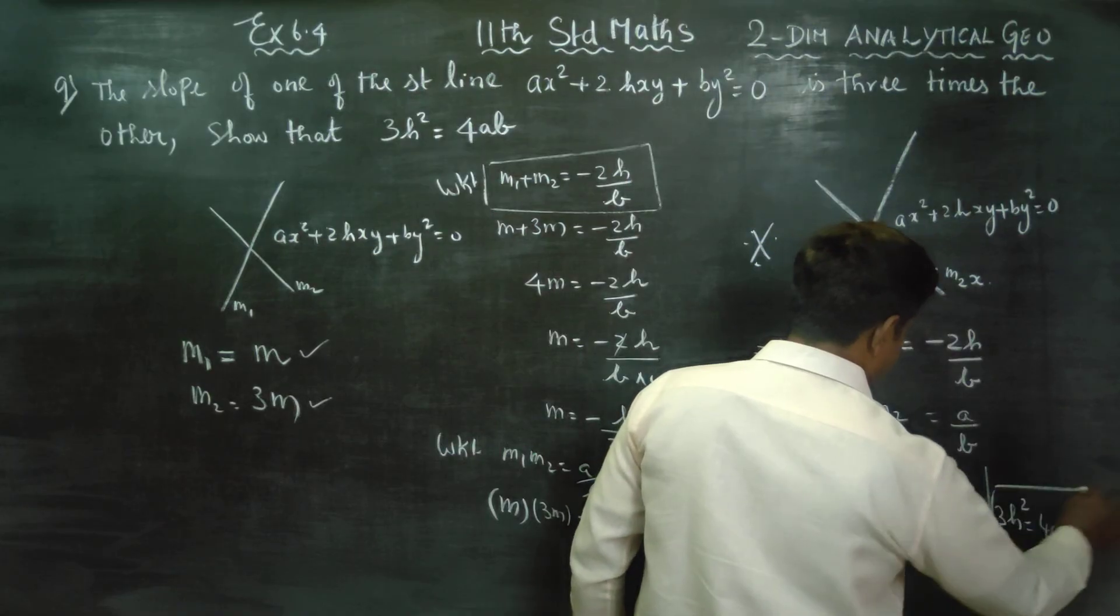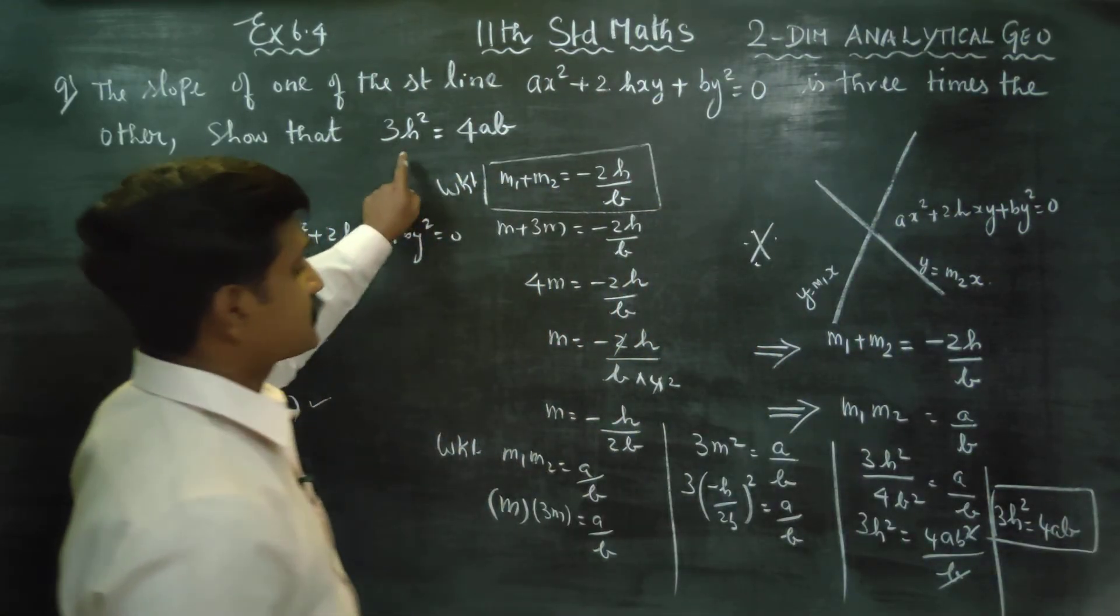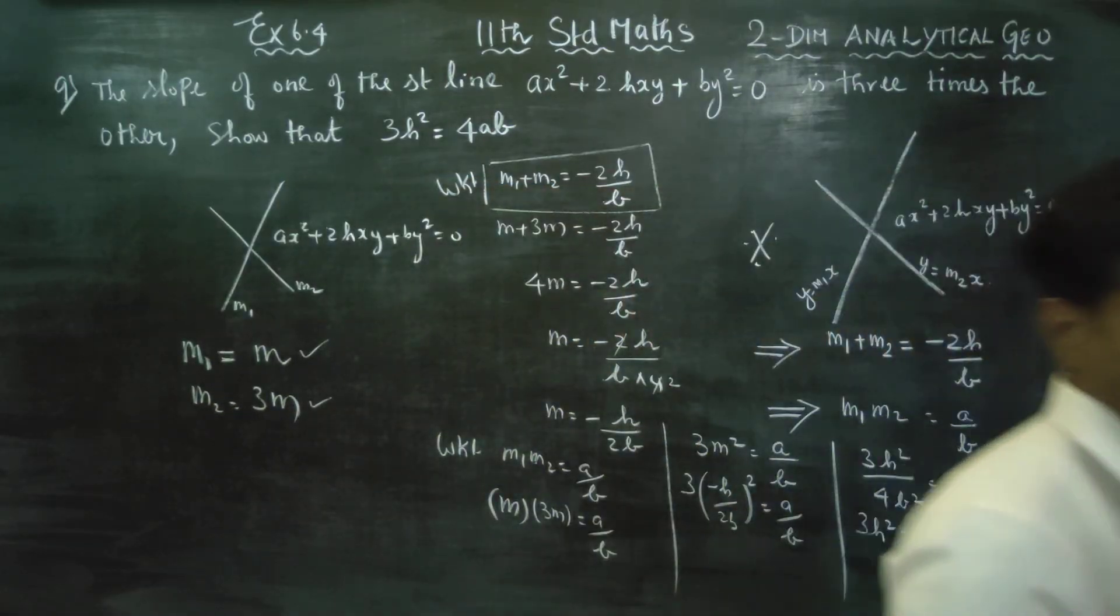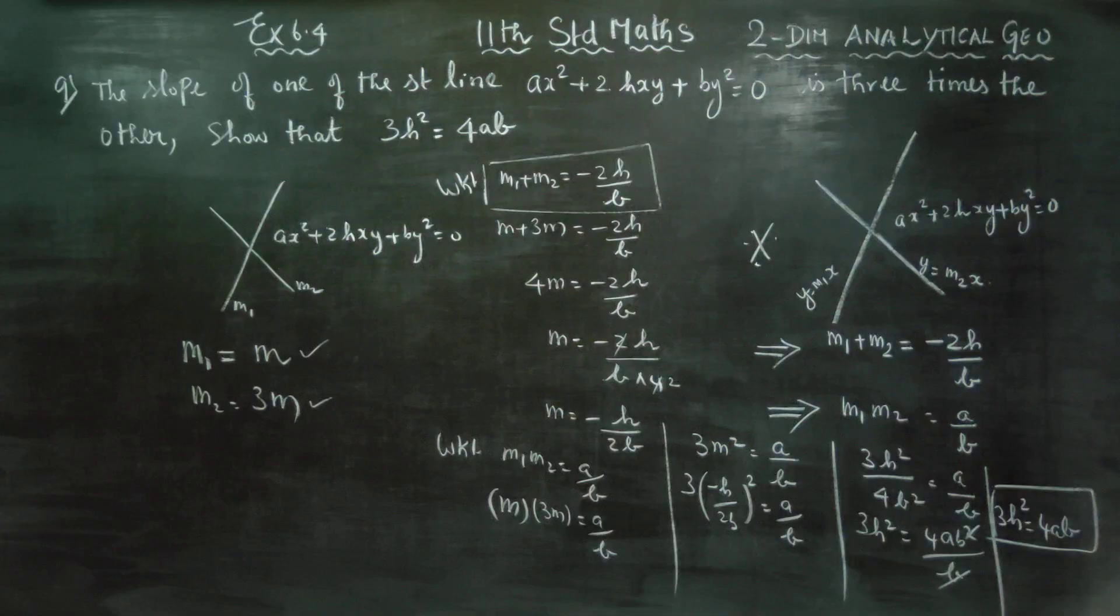How can we prove that 3h square is equal to 4ab? Therefore, our answer is 3h square is equal to 4ab will be the final answer for this sum. Okay. Thank you.